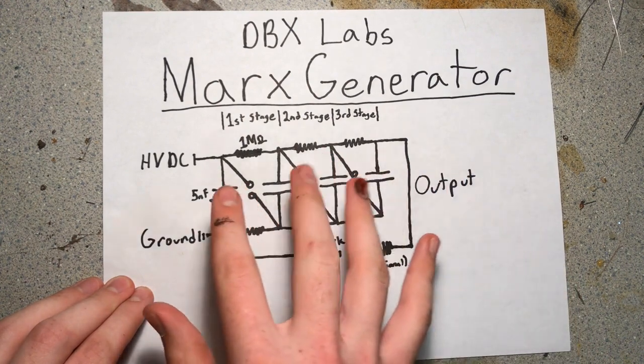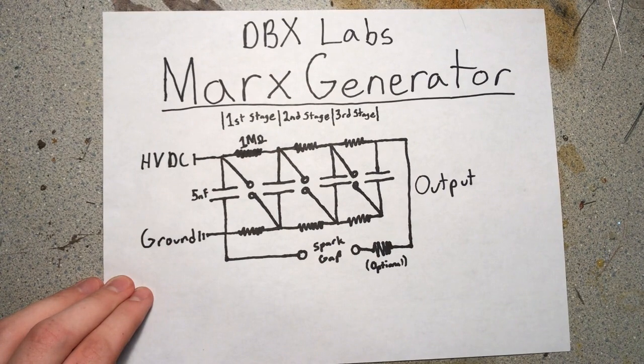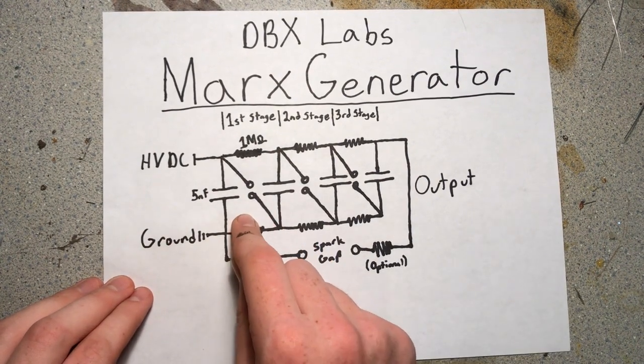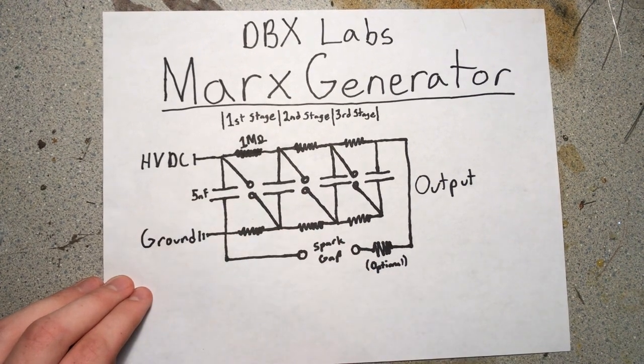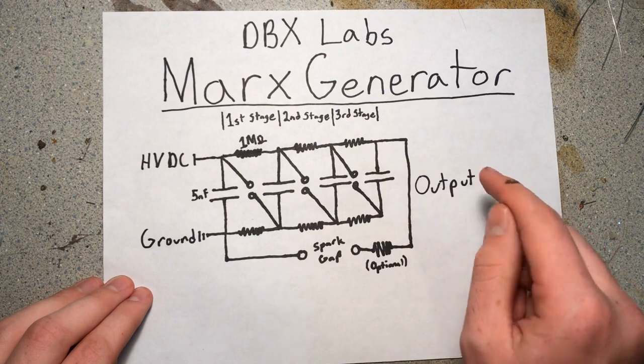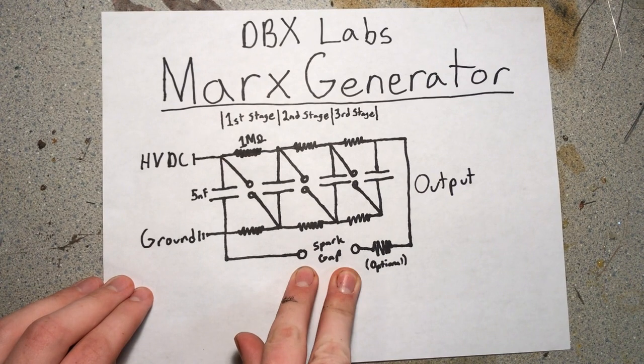So it's five times the input voltage, and it only really works if you have high-voltage input because otherwise you're not going to have a spark to power that spark gap. But then you can take the output, feed it into ground, and have an even larger spark gap.